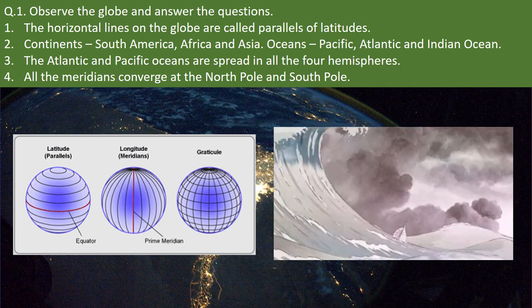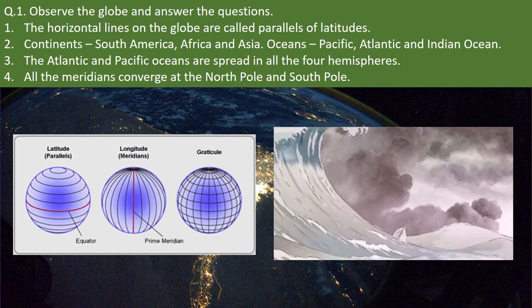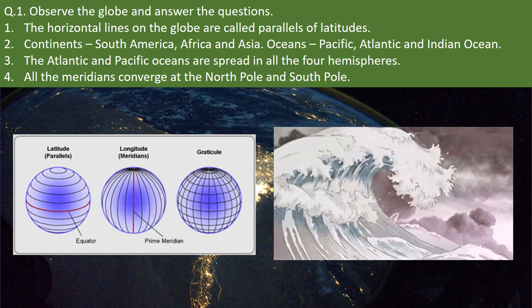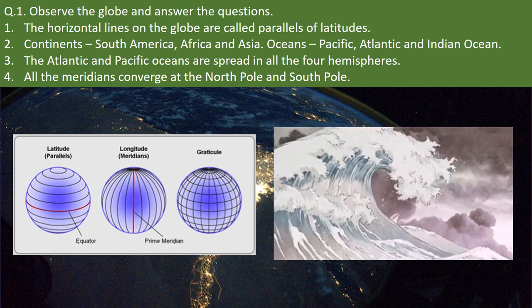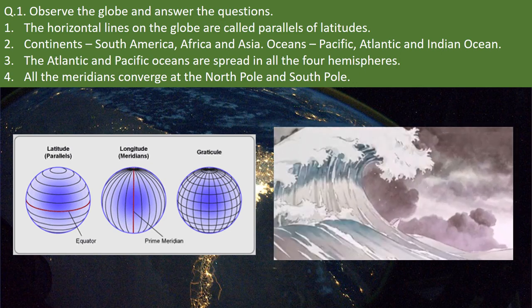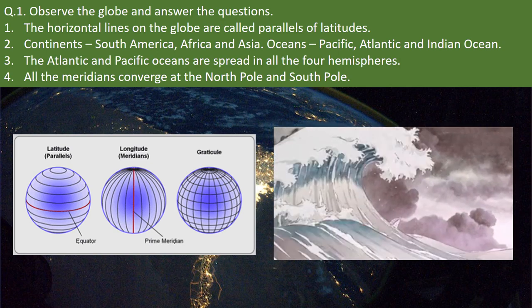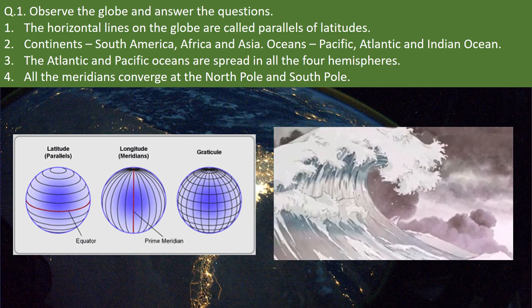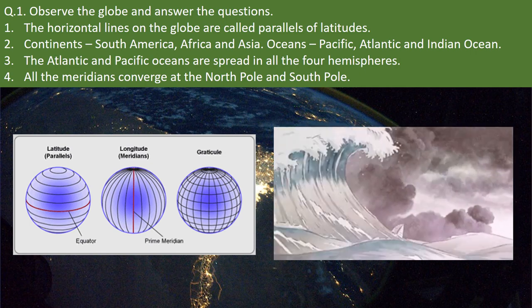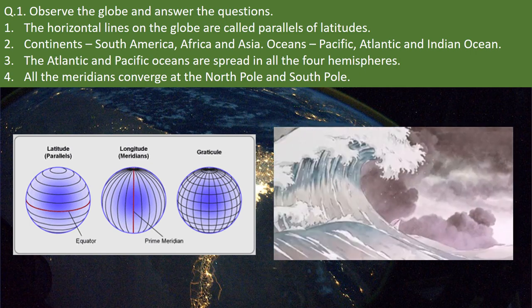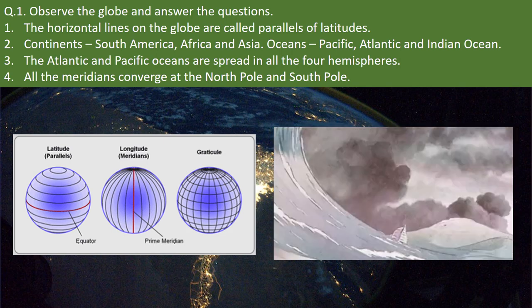List the continents and oceans through which the equator passes. The equator passes through the continents of South America, Africa and Asia. The equator is located in three major oceans namely the Atlantic Ocean, the Indian Ocean and the Pacific Ocean. Which oceans spread in all the four hemispheres? The Atlantic and the Pacific oceans spread in all the four hemispheres.